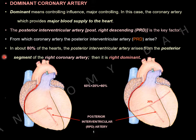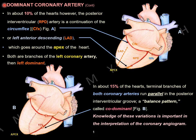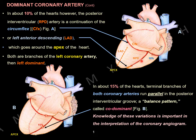In this diagram, this is the posterior interventricular artery coming from the right coronary artery. The posterior interventricular artery is also known as the right posterior interventricular artery. This is the key factor to decide whether right dominant or left dominant. If this artery comes from the right coronary artery, it is right dominant. If this one comes from the left coronary artery, we call it left dominant.